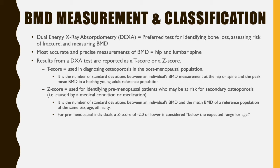The preferred test for identifying bone loss, assessing risk of fracture, and measuring bone mineral density is the DEXA scan. DEXA stands for Dual Energy X-ray Absorptiometry. The most accurate and precise measurements of BMD are the bones in the hip and lumbar spine. The results from a DEXA scan are reported as a T-score or a Z-score. The T-score is used in diagnosing osteoporosis in the postmenopausal population. It is calculated by comparing an individual's BMD measurement at the hip or spine with the peak mean bone mineral density in a healthy young adult reference population, and is expressed as the number of standard deviations from the mean bone mineral density.